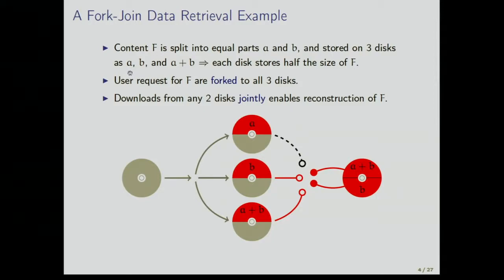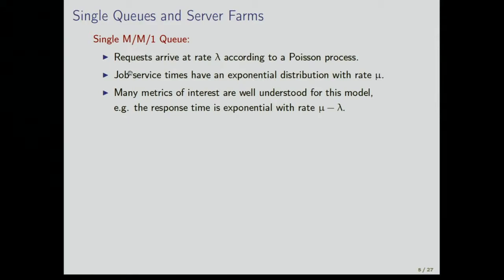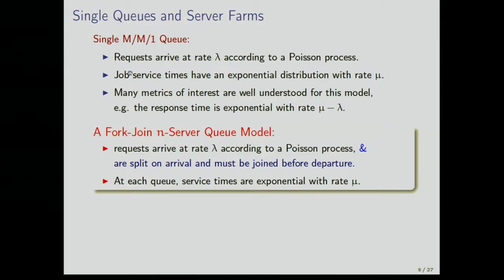I'm going to model this using queuing theory. First, let's look at a single M/M/1 queue: requests arrive at rate lambda according to a Poisson process, with job service times of exponential distribution at rate mu. Many metrics are well understood for this model — in particular, the response time from arrival to departure is also exponential with rate mu minus lambda. There is another queuing model I need, called the fork-join or answer-or queue model.